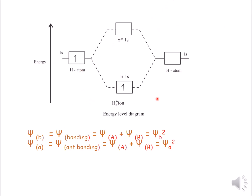This is the energy level diagram for the formation of the H2+ ion. On the vertical axis we have energy. We can see the atomic orbital of H, which has one electron, and the atomic orbital of H+, which has no electrons — because H+ is formed by losing the one electron that hydrogen originally has.